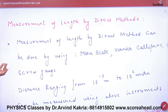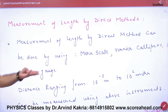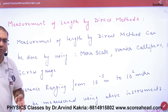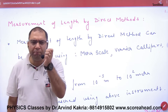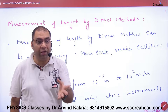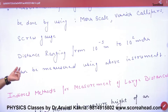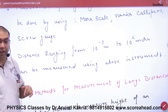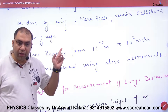The measurement of length by direct method can be done using a meter scale. For more precision, we use vernier calipers and screw gauges, which we will study in the lab in Plus One. These instruments can measure thickness in millimeters. Distances ranging from 10 to the power minus 5 meters up to 10 to the power 2 meters can be measured using these instruments.